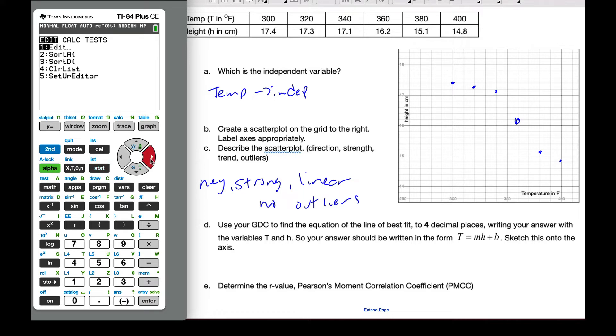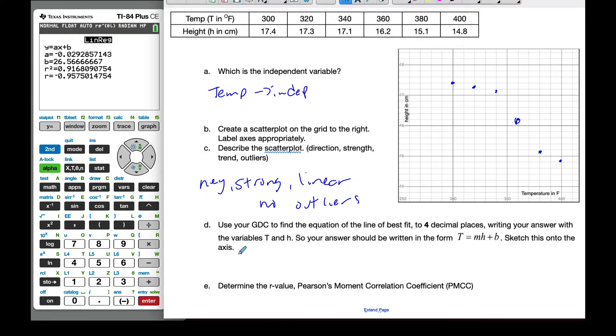All right, so let me try this again. So I'm going to go calculate number 4, and we'll put the regression equation into Y1 so I can use it. And let's calculate it. And so what I can say is that T is equal to negative 0.0293, because it says 4 decimal places. This is 4 decimal places. H plus 26.5667.